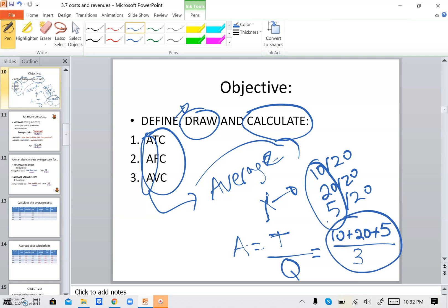Now, average total cost. The formula would be, let me write it in a different color so you can differentiate. Average total cost will be the total cost over the quantity. Average fixed cost will be the total fixed cost over the quantity. Average variable cost will be the total variable cost over the quantity. So this is what we will be doing in this recording. You will be capable to calculate, to graph, and to define.